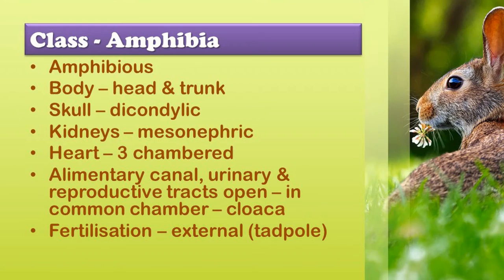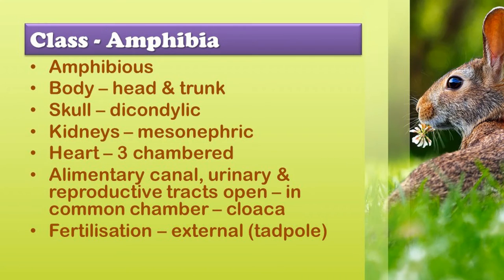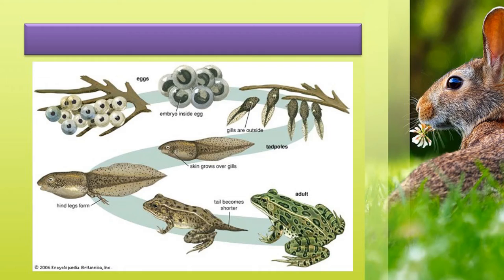Next, we have Class Amphibia, which comes under Superclass Tetrapoda. Tetrapoda means four legs — they are four-legged organisms. Amphibia can live both on land and in water. Body is divided into head and trunk. The skull is dicondylic. Kidneys are mesonephric. They are poikilothermic. The tail may or may not be present. The skin is smooth. The alimentary canal, urinary tract, and reproductive tract open into a common chamber called cloaca. Fertilization is external and the young ones are called tadpoles. The eggs hatch into tadpoles, which grow limbs to become the tailed frog and then frog. Heart is three-chambered. They are oviparous with indirect development having a tadpole larva. Examples: Bufo (toad), Rana (frog), Hyla (tree frog), Salamander.